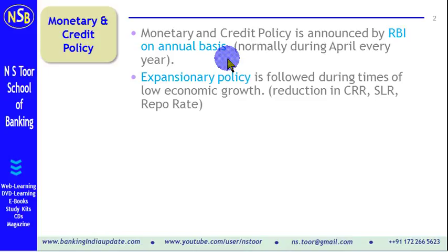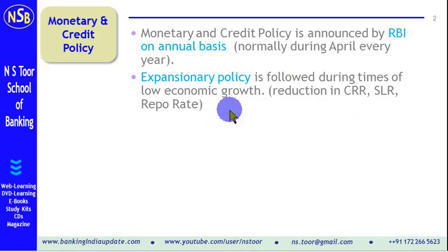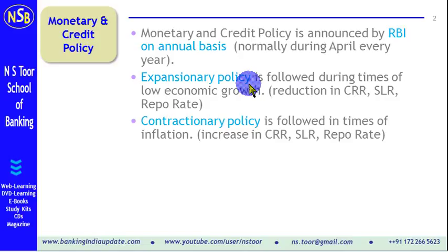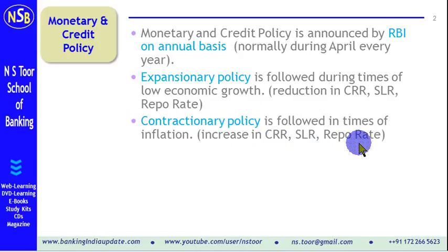This policy is reviewed on a bi-monthly basis. The policy can be an expansionary policy, which means a reduction in CRR, SLR, or repo rate. This is done to augment economic growth when economic growth is low. RBI follows expansionary policy; when there is inflation, RBI follows a contractionary policy.